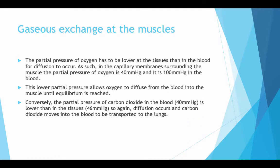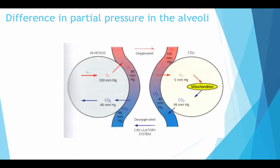Conversely, the partial pressure of carbon dioxide in the blood is lower than in the tissues, so diffusion occurs and carbon dioxide moves into the blood and is transported to the lungs. As you can see here, this is a diagram of the partial pressure in the alveoli, showing how it changes from the alveolus into the cells.